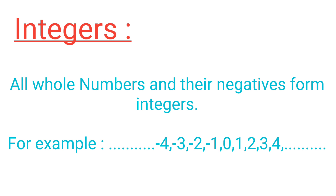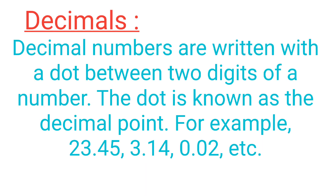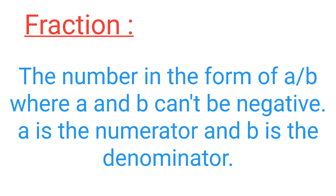After integers, we look at decimals. Decimals are numbers written with a point. The left side of the point is called the whole number part, and the right side is called the decimal part. Similarly, fractions are when we write any number in the form of a upon b, where a and b are numerator and denominator. A fraction is never negative.